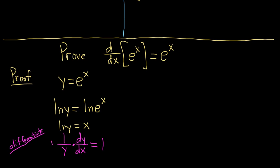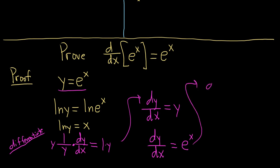Now all we'll do is multiply by y. So we end up with dy dx equal to y. But what is y? Y is e to the x. So dy dx equals e to the x. You can write it as d dx of e to the x equals e to the x, and the proof is complete. I hope this video has been enlightening or helpful in some way. The derivative of e to the x is e to the x.